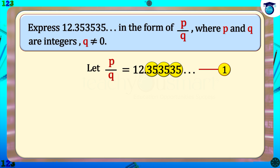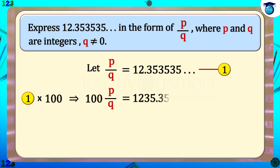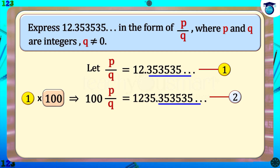Since two digits are repeating, multiply by 100. That is, equation 1 multiplied by 100 implies that 100 p by q equals 1235.353535... — mark it as equation 2. Similarly, if one digit is repeating, multiply by 10; if three digits are repeating, multiply by 1000, and so on. Can you say why we multiply equation 1 by 100? When we multiply equation 1 by 100, the digits after the decimal point in equations 1 and 2 are the same.